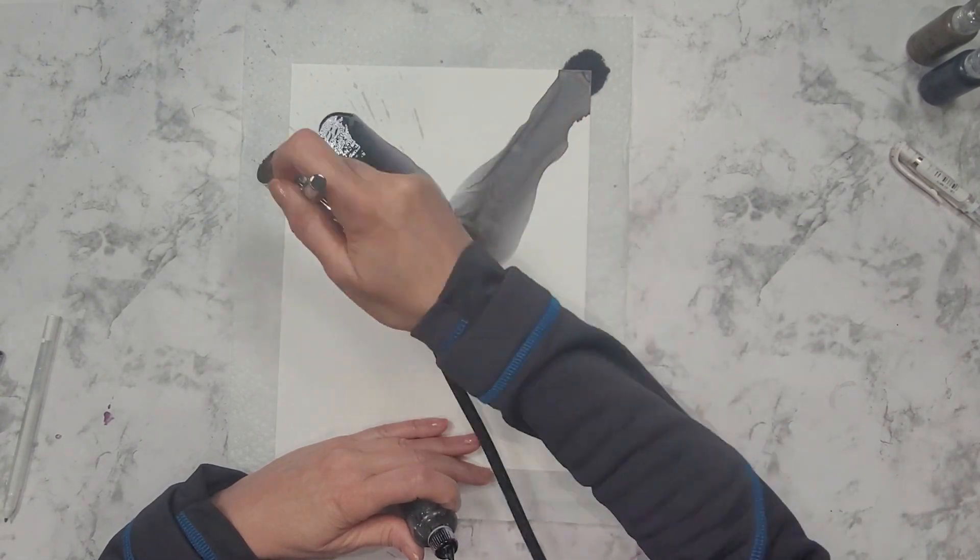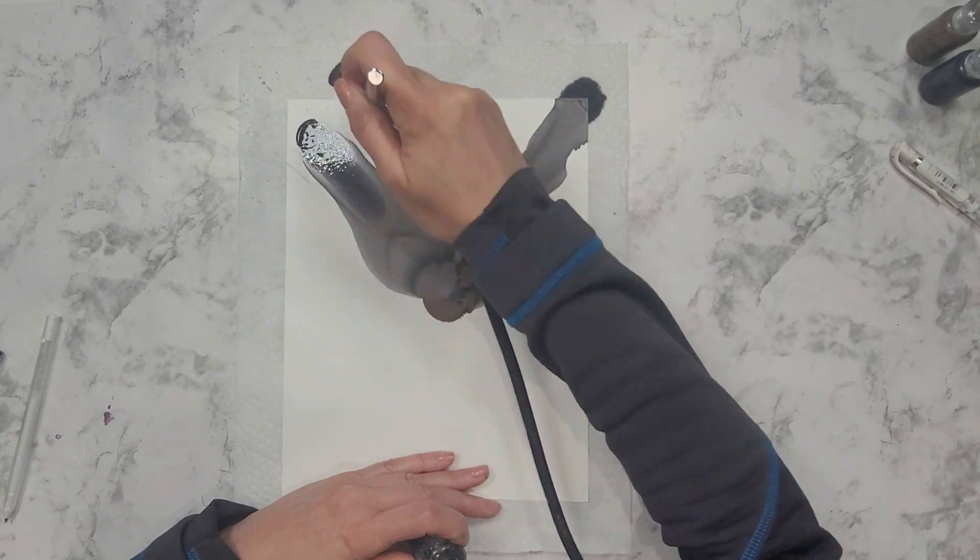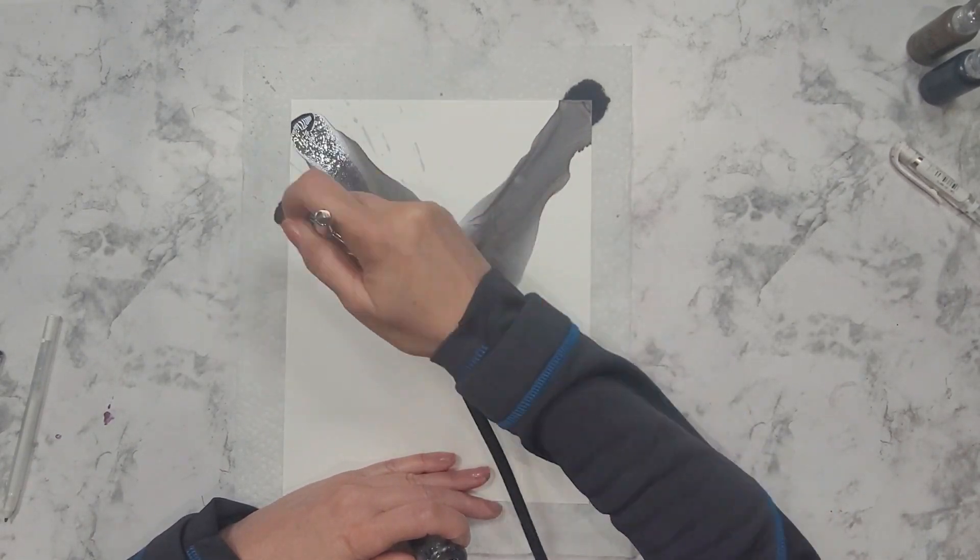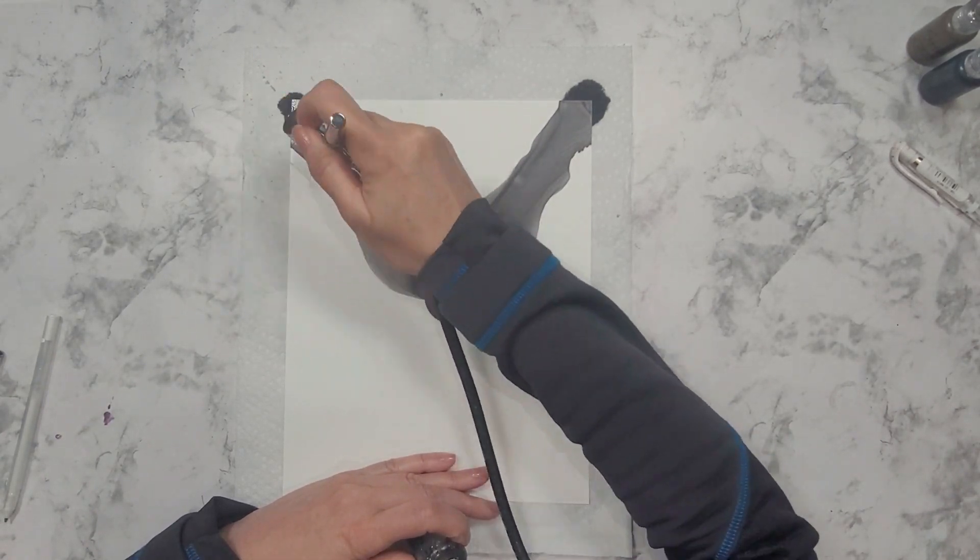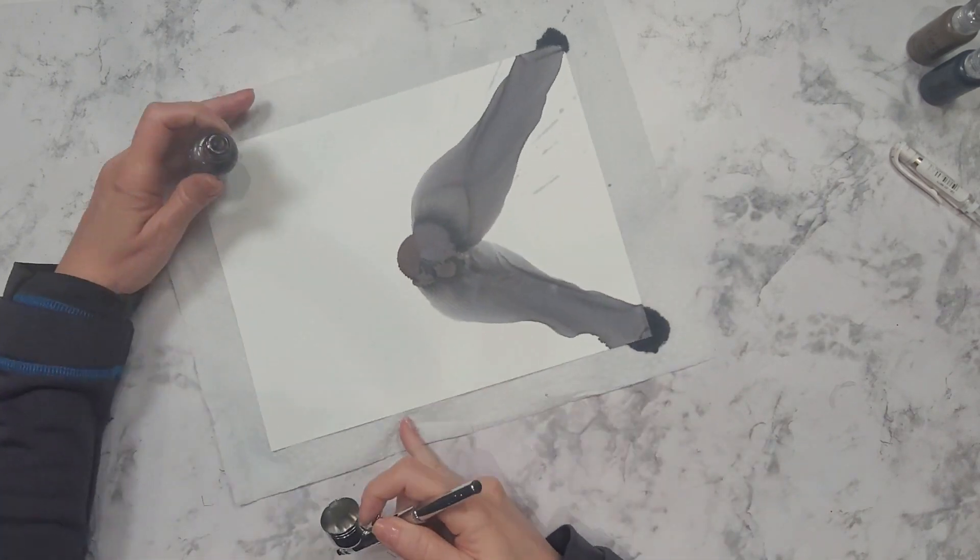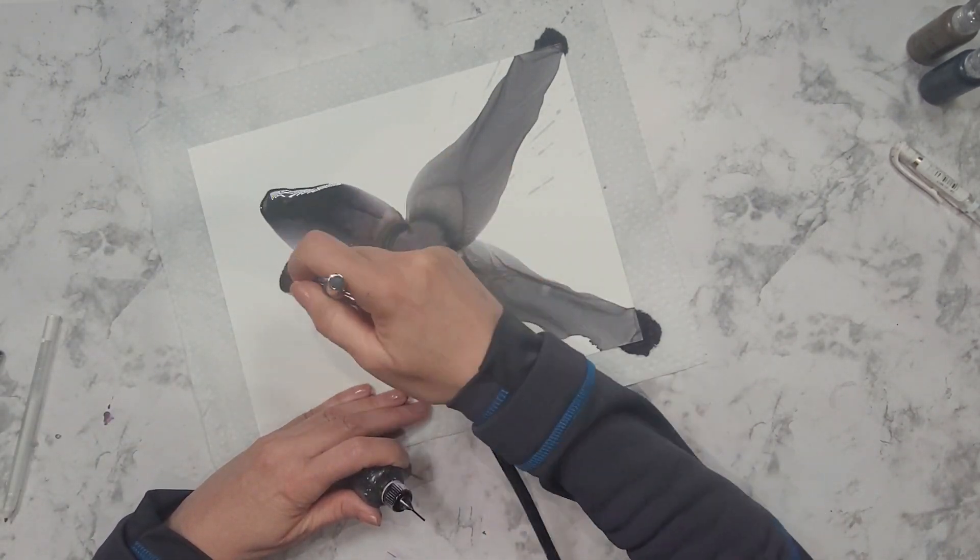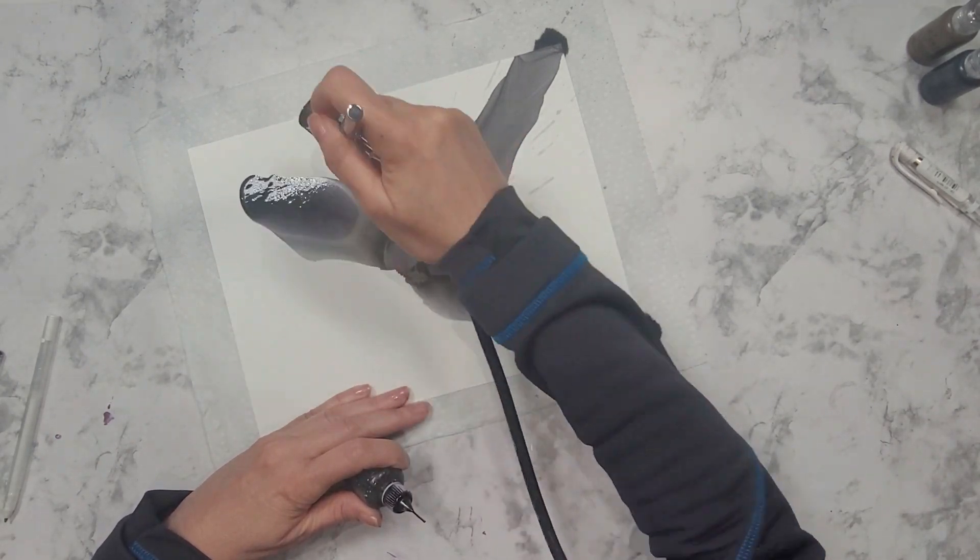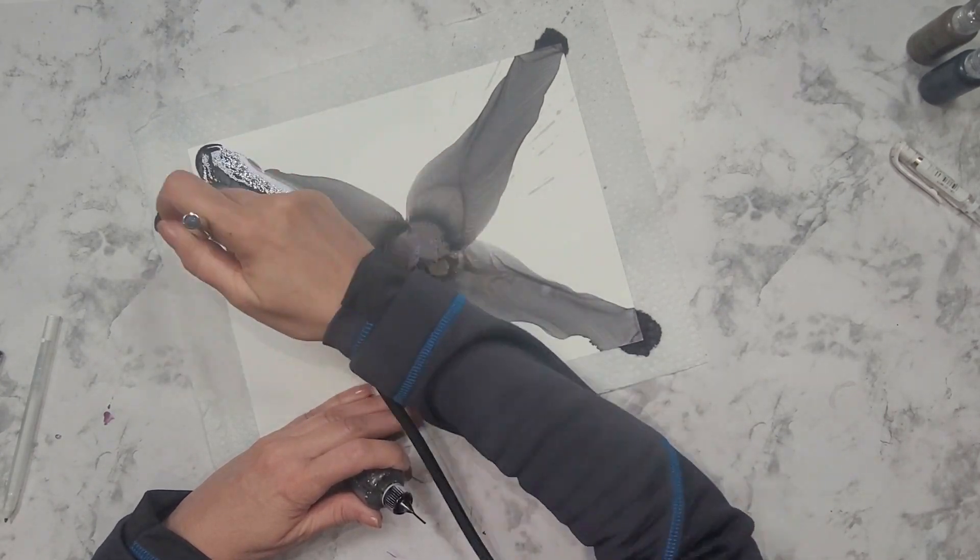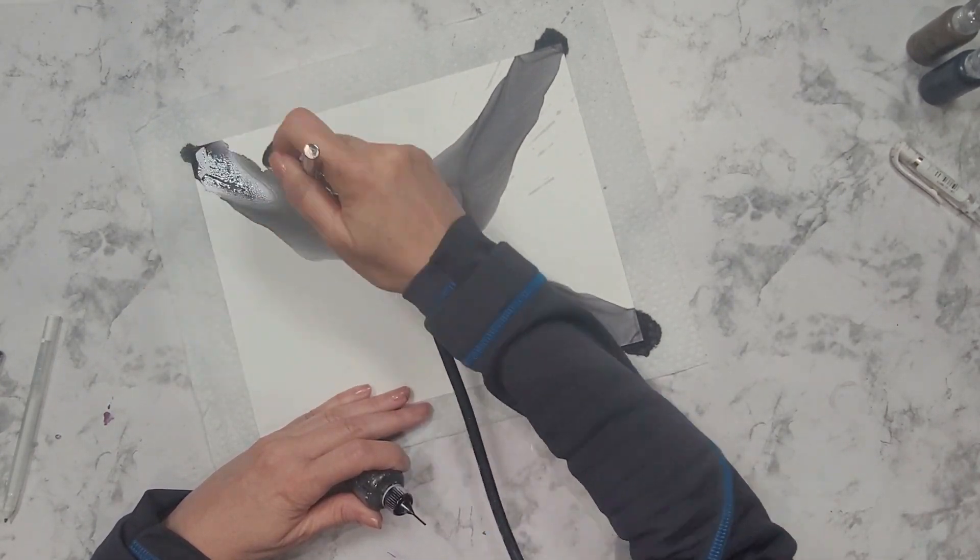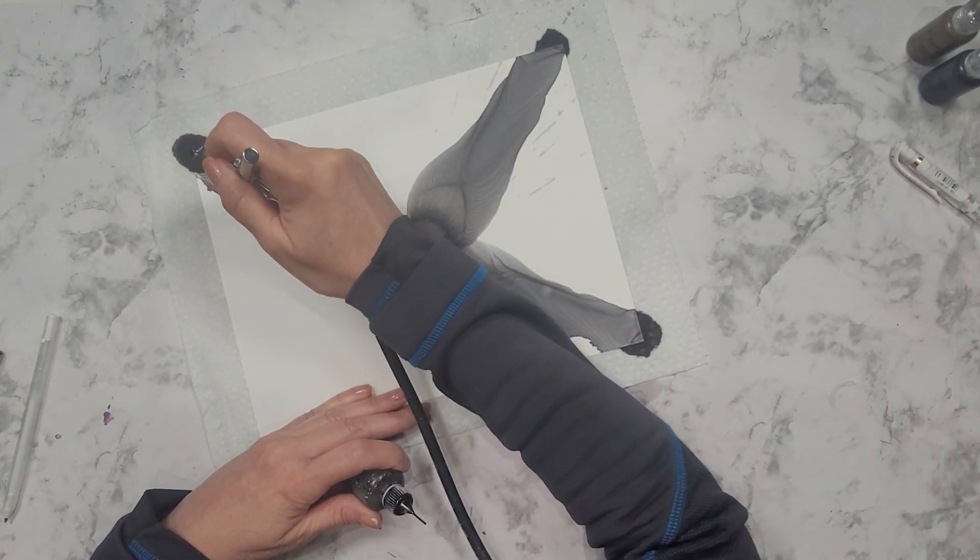Once I get that ink moving, I just continue to go around and around the sides of the petal. Every time I do that I get a new ripple. I'm not concerned with the way the tips of the petals are looking because I'm going to use my Posca pens to reshape them. This is a little time consuming. It takes a while to get the petals the way you want to get this ripple effect. But if you take your time and you're patient, it'll turn out beautiful.